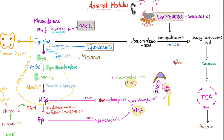The adrenal medulla secretes the catecholamines: epinephrine, norepinephrine, and dopamine — also known as adrenaline, noradrenaline, and dopamine. The biosynthetic pathway is: phenylalanine → tyrosine → dopa → dopamine → norepinephrine → epinephrine. Norepinephrine and epinephrine will raise your blood pressure, heart rate, and stroke volume to help you run from a tiger. This is the sympathetic nervous system fight-or-flight response.